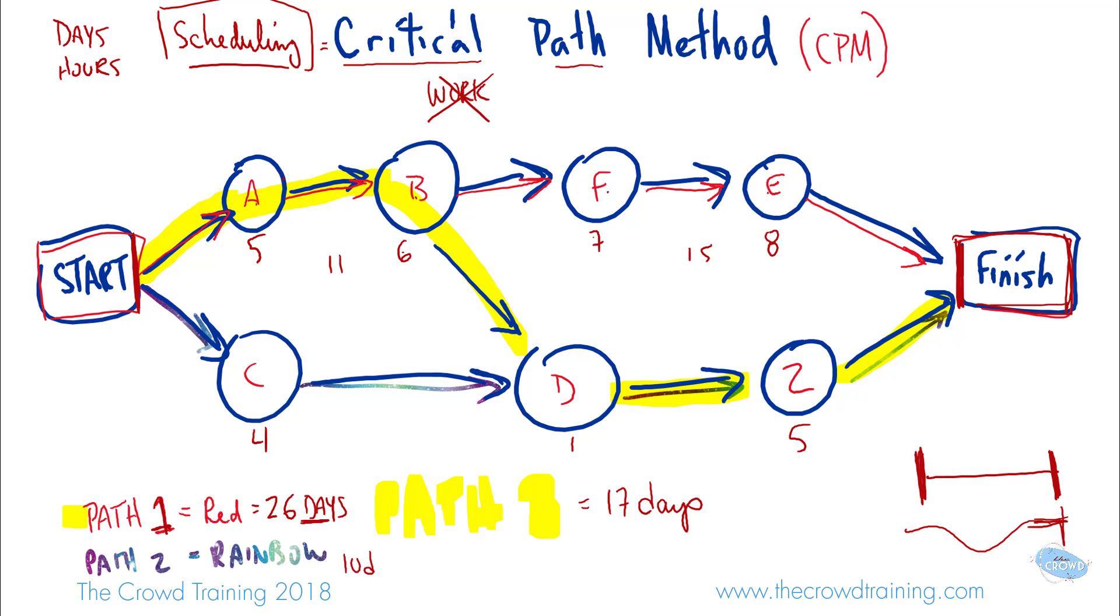So we have to figure out which one is most critical in terms of time considerations. And that, as you see, is the one that's the longest and that would be 26 days. So the critical path then is the longest path in terms of scheduling. And that, in this example, is number one, 26 days.